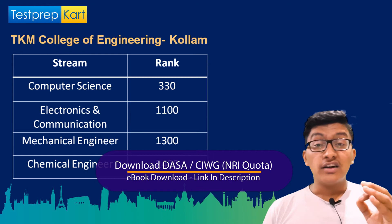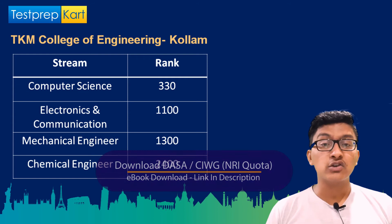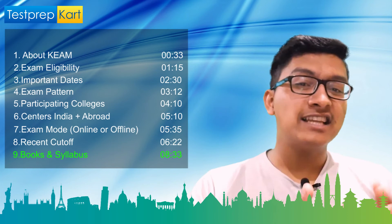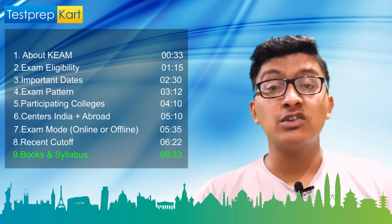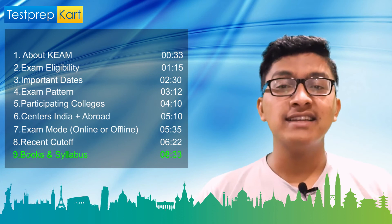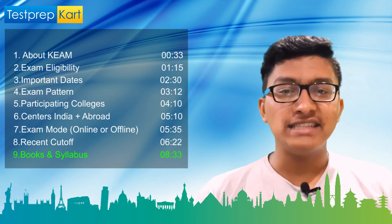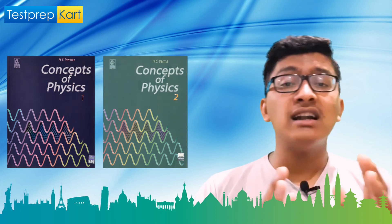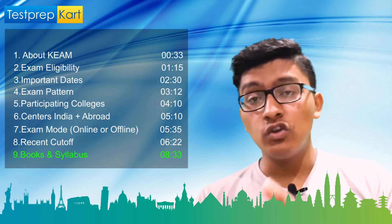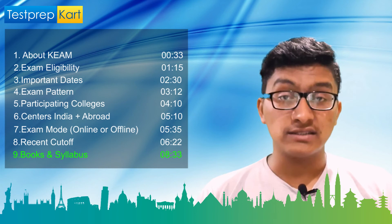Now let's discuss important books and syllabus for KEAM, subject by subject. For Physics, HC Verma is undoubtedly the best book — solve both volumes: Volume 1 for Class 11 and Volume 2 for Class 12. Apart from HC Verma, go through your NCERT book thoroughly, as NCERT carries significant weightage in KEAM.